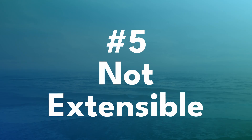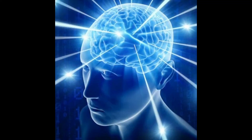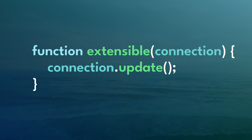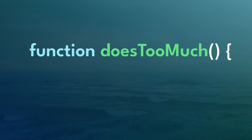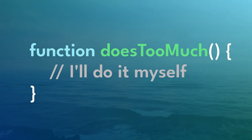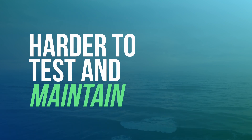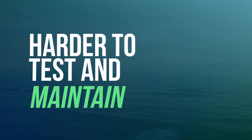This is a code smell that I haven't seen covered in too many videos or blog posts, as it's more of an abstract idea. When you have some functionality that has potential to change, it should be passed into the function or class. Functions that tend to do too much will implement the functionality within themselves instead of having it passed in. This can lead to harder-to-test code and make your code harder to maintain in the long run.